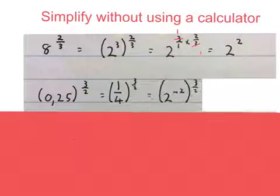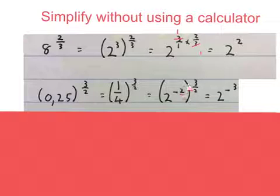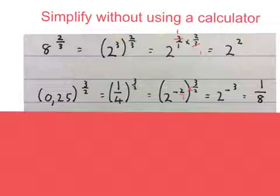Then we rewrite this in exponential form that will become 2 to the power of minus 2 keep the 3 over 2 and we times the two exponents and we get 2 to the power of minus 3 and then in general we don't like to have negative exponents in our answers so we write it as 1 over 8.